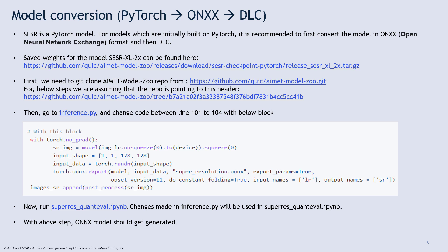First, we need to get the model weights for SESR XL 2X. Then clone the AIMet Model Zoo repo and make sure the repo head is pointing to the version mentioned here. In the inference file mentioned, change the code as instructed.